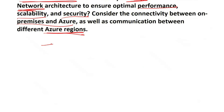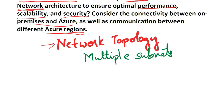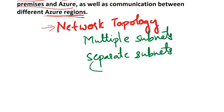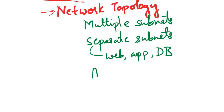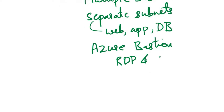First, let's discuss network topology. Plan your virtual network topology carefully. Consider using multiple subnets to organize resources logically. Use separate subnets for different tiers of your application — for example, web, app, and database — to enhance security. Consider using Azure Bastion for secure RDP and SSH connectivity to virtual machines without exposing public IPs.